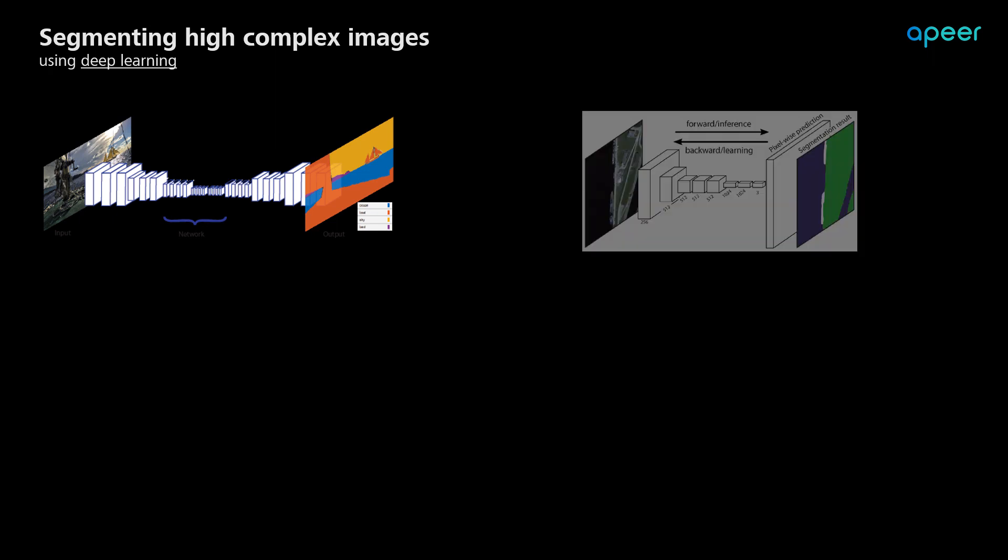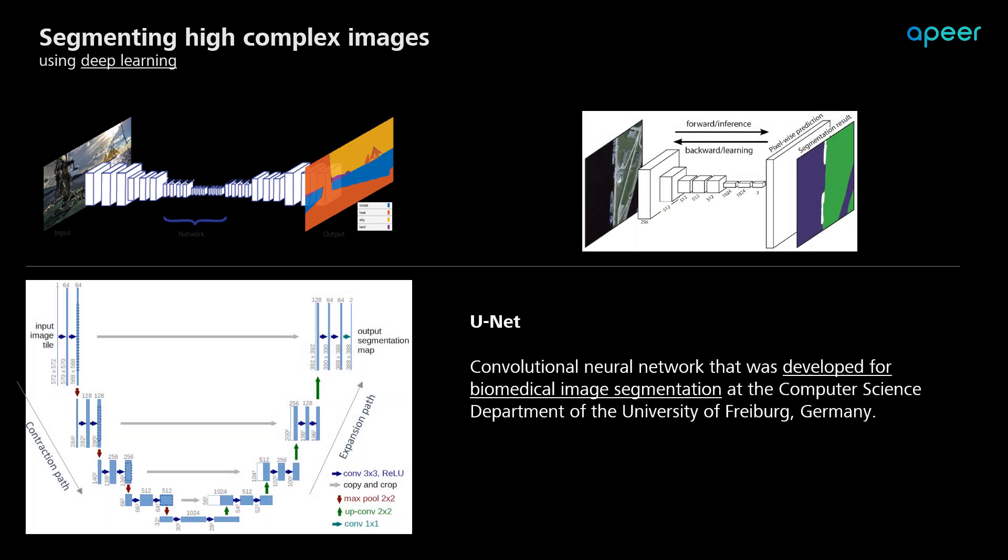But deep learning has many architectures, and a new architecture is published almost on a weekly basis. U-Net has been proven to be a viable approach for scientific image processing, especially in the field of biomedical image segmentation. U-Net is an architecture that arranges convolutional filters in a contraction path, where the input image is progressively scaled down, and an expansion path, where the scaled down information is upscaled back to the original image size.